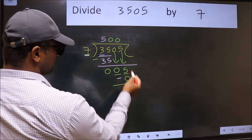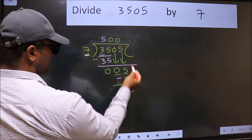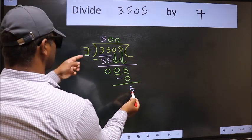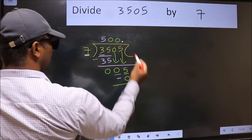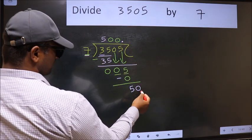Over here, we did not bring any number down. And 5 is smaller than 7. So now we can put dot and take 0. So 50.